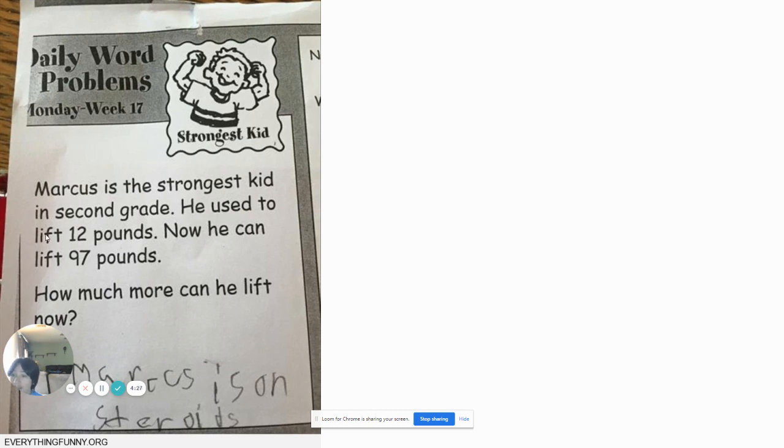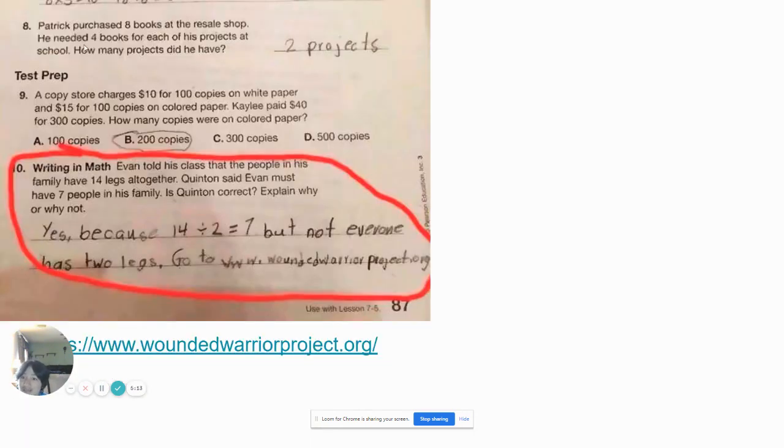Daily Word Problems. Marcus is the strongest kid in 2nd grade. He used to lift 12 pounds, and now can lift 97 pounds. How much more can he lift now? Marcus is on steroids. Yes. Obviously. If he can lift 12 pounds, and then suddenly he can lift 97 when he's in 2nd grade, he has to be on steroids. Only steroids can be the possible answer. Not like in 1st grade he would start lifting weights, then start lifting them often, and then lift 97 pounds. But no, yeah, obviously steroids could also be an answer. Now steroids can show up on tests. So now you can know if he's on steroids or not.